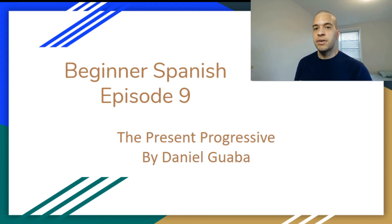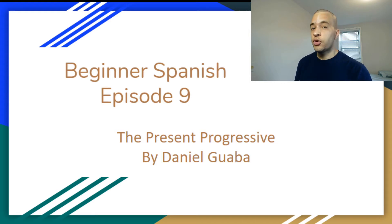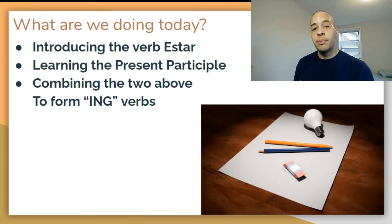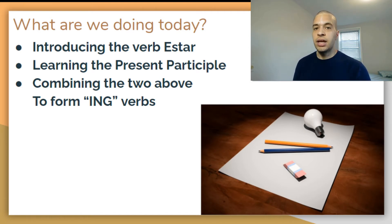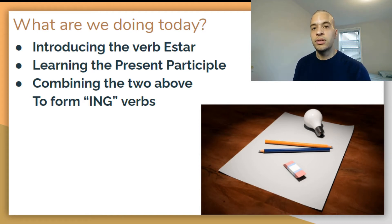Basically the present progressive is talking about any verb that's going on right now. It's when you use the ending ING in an English verb. So today we're gonna talk about the verb ESTAR, the present participles of verbs in Spanish, and how you can combine these two to create phrases that in English have the equivalent of a verb with ING.